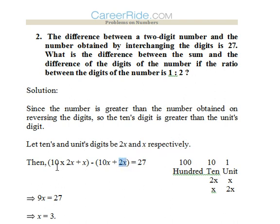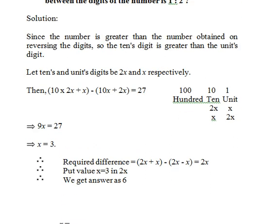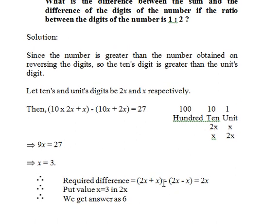So (10 times 2x plus x) minus (10x plus 2x) gives the difference as 27. That gives 9x equals 27, so x equals 3. The required difference between the sum and the difference of the digits is (2x plus x) minus (2x minus x), which equals 2x. With x equal to 3, the answer is 6.